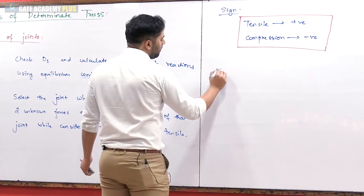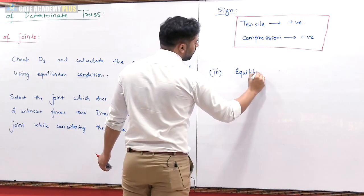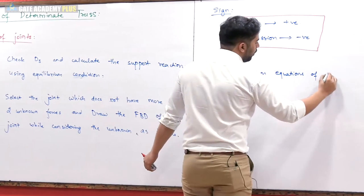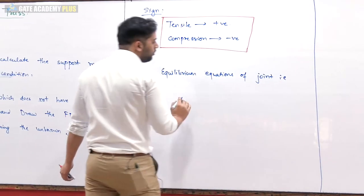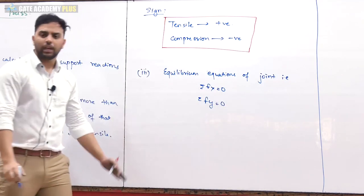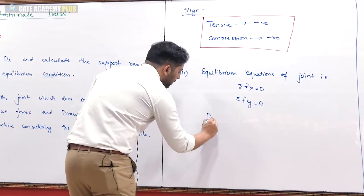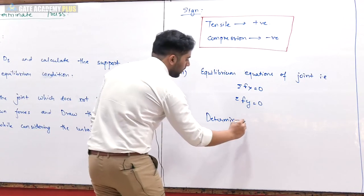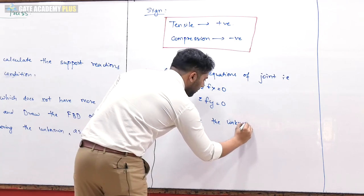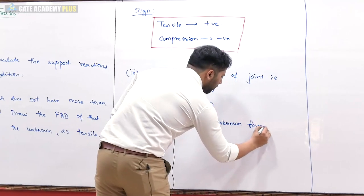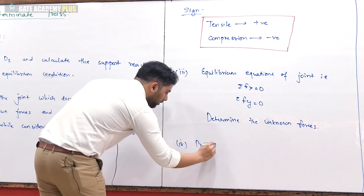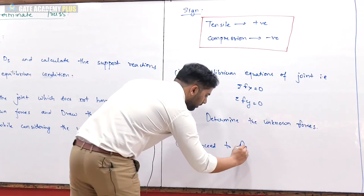Step number 3: apply the equilibrium conditions of that joint — summation Fx equals to 0 and summation Fy equals to 0 — and determine the unknown forces. Then proceed to the further joints.